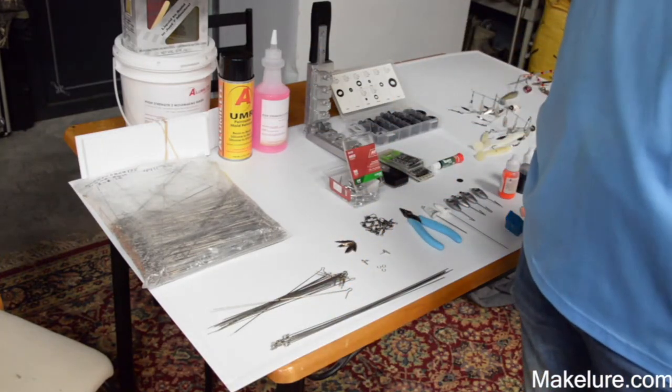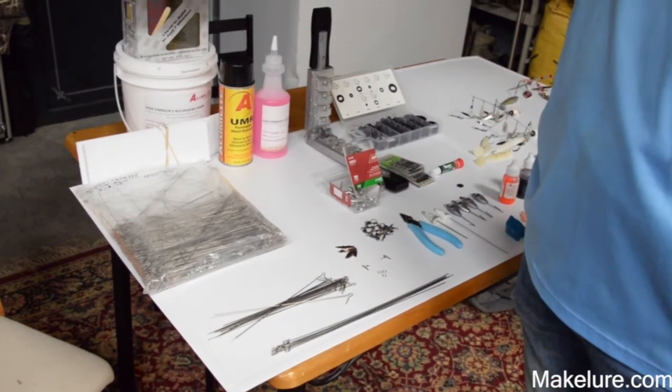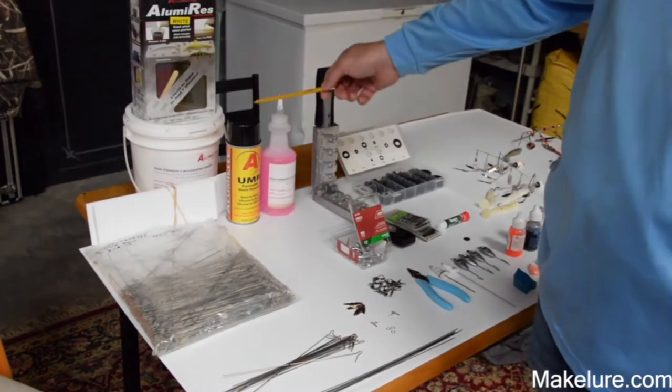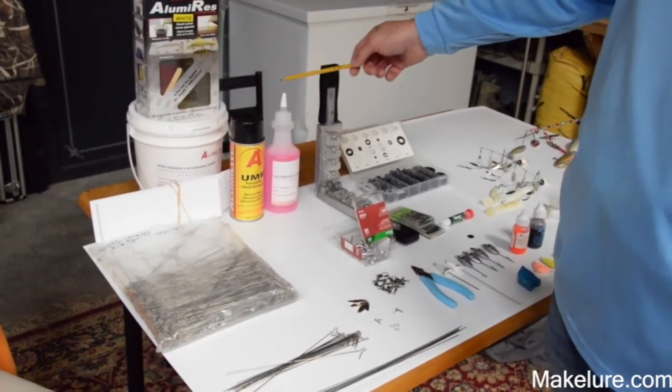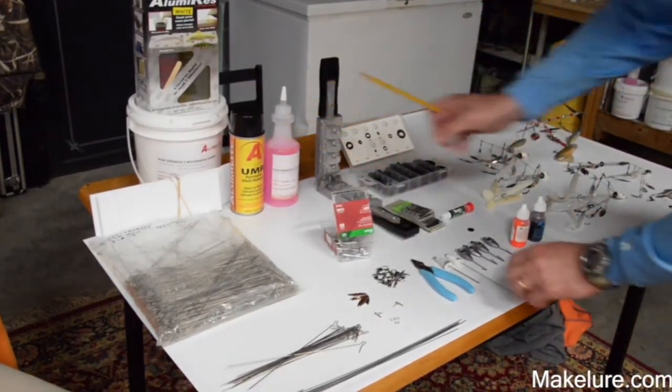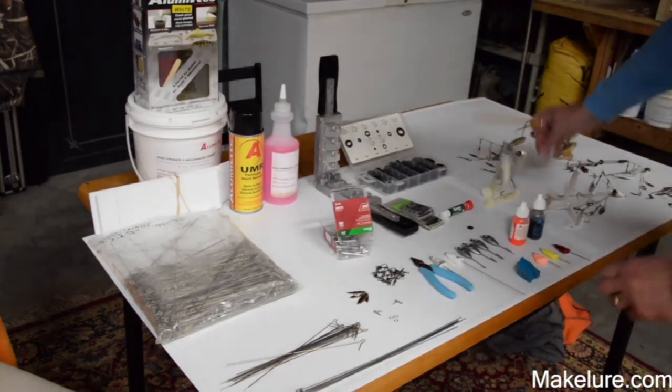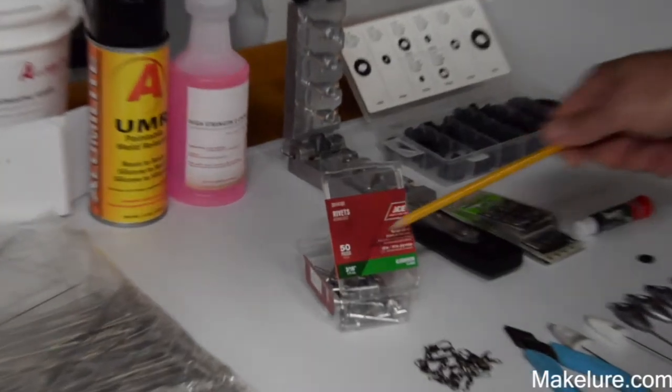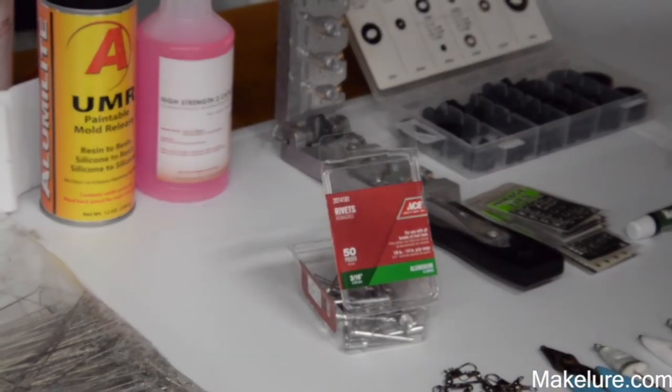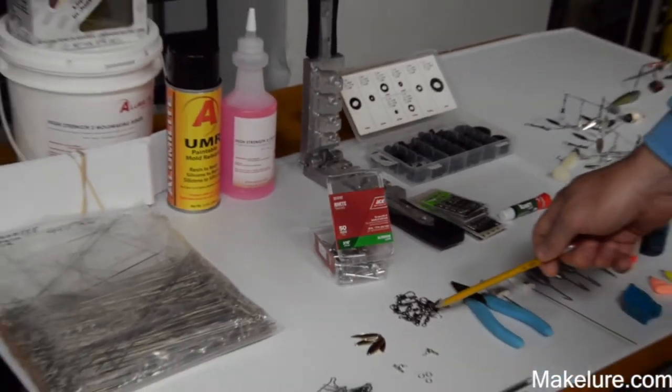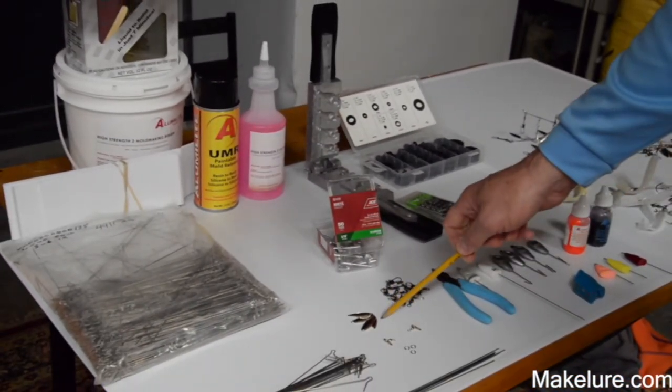A must is the Alumilite, Alumarez white casting material. Mold release, activator, high strength 2. This is what goes inside our A rig heads to hold the wires all together. This is a 3/16th pop rivet. Your choice of swivel on the end of your A rigs and the size willow leaf you need.